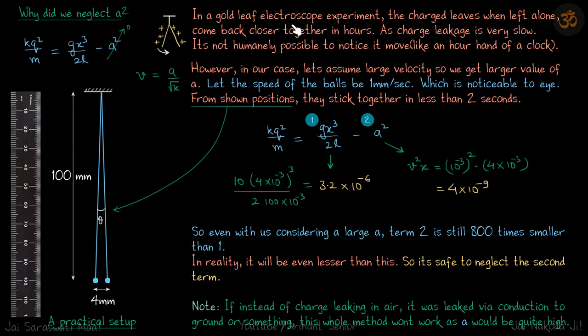In typical gold leaf electroscope experiment, the charged leaves when left alone come back closer together in hours. Its charge leakage is very low in air. It's not humanly possible to notice it move like an hour hand of a clock.